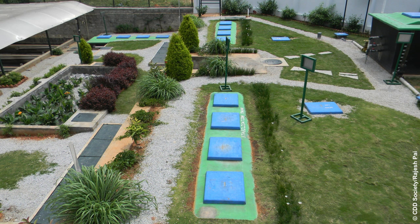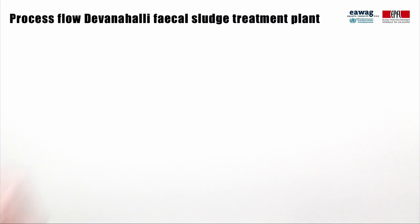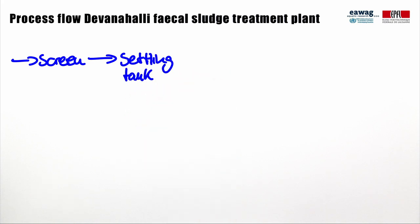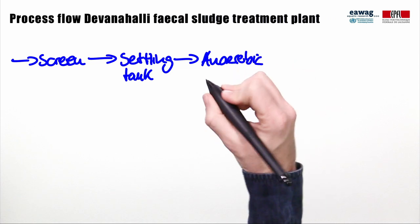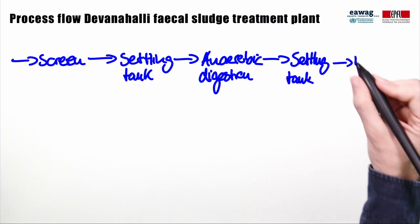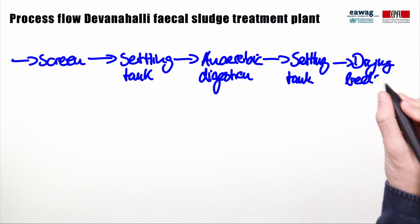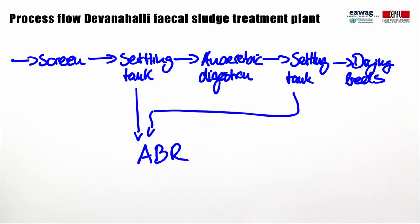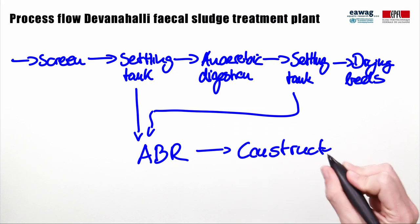This picture shows the fecal sludge treatment plant in Devanali, north of Bangalore in India. In contrast to Demagete, Devanali has a treatment capacity of only 6 cubic meters per day and receives mostly sludge from pit latrines. This is one reason why different treatment technologies were selected for effluent treatment. Following a screen, solids and liquid are separated by a settling tank. The solids are treated in parallel by anaerobic digesters, followed by another settling tank, after which solids are dewatered on unplanted drying beds. Instead of waste stabilization ponds, the liquid effluent from the settling tanks is treated in an anaerobic baffled reactor (ABR), followed by treatment in constructed wetlands.